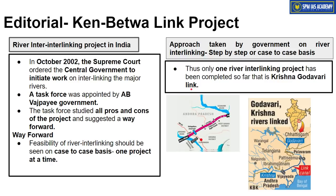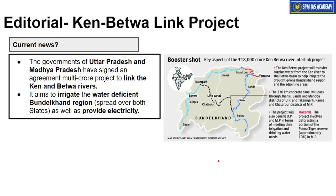Following this case-by-case approach, in 2016 the Krishna-Godavari river interlinking project was implemented — the Godavari's water was transferred to the Krishna river via the Polavaram Right Canal. This was the first river linking. Now the second linking project is being implemented: the Ken-Betwa Link Project. The governments of Uttar Pradesh and Madhya Pradesh have signed an agreement to proceed. This is the current news.